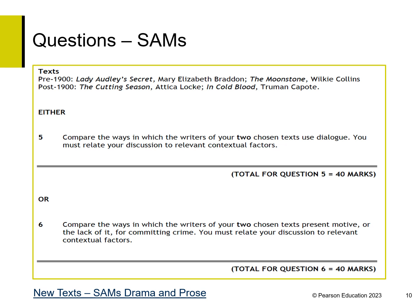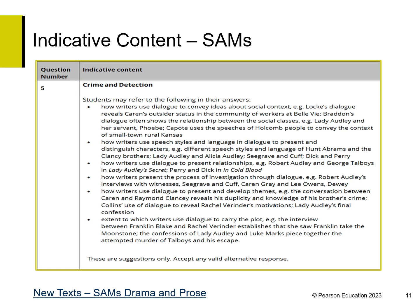Both questions then have a second sentence, 'you must relate your discussion to relevant contextual factors,' which directs students to AO3. The questions focused on how the writers use dialogue and present motive, or the lack of it, for committing crime. This is the indicative content for question 5. As you can see from the note at the bottom, these are suggestions only and any valid response is accepted. You may want to pause this recording and read the indicative content and make a note of how it incorporates the four assessment objectives.